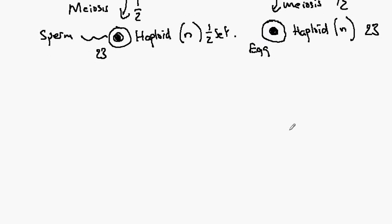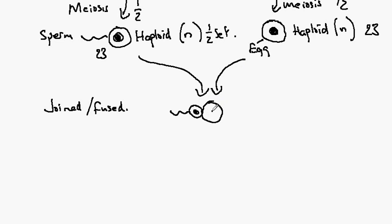In sexual reproduction, these two cells are brought together and they are joined or fused together so that this cell will join with this cell so that it forms just one cell.